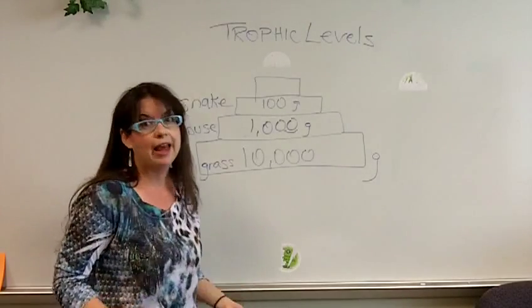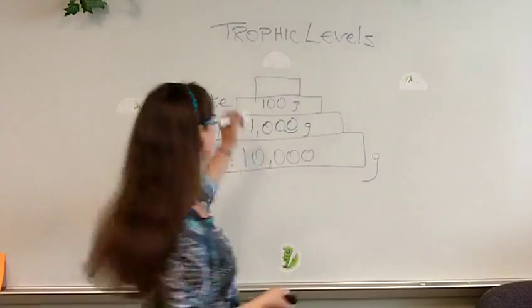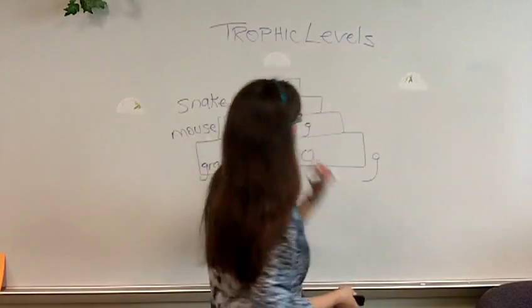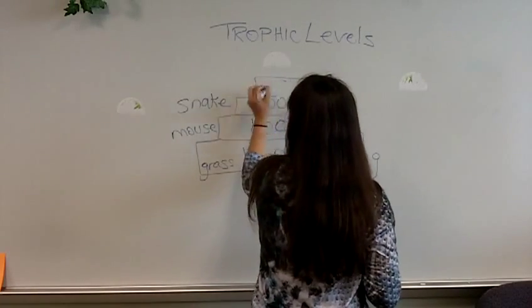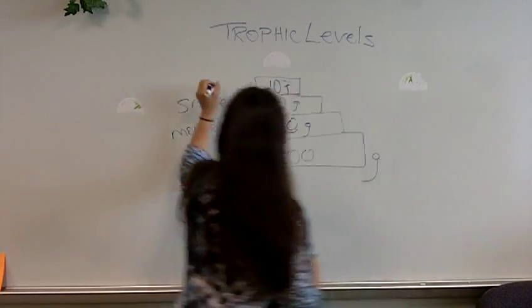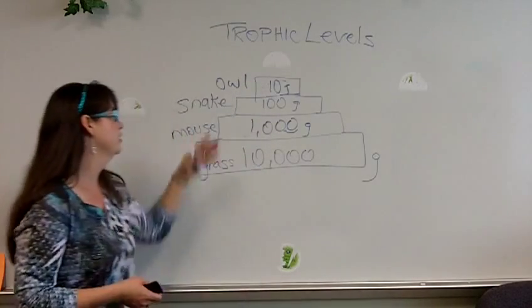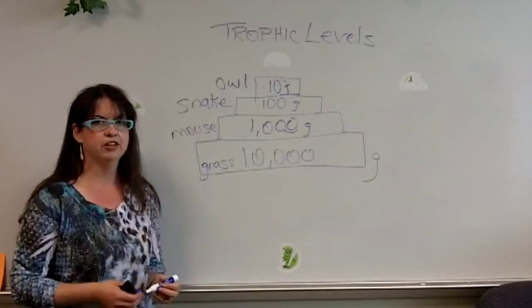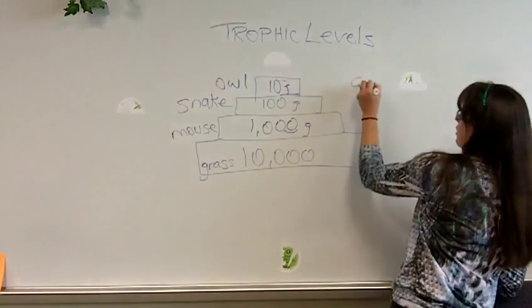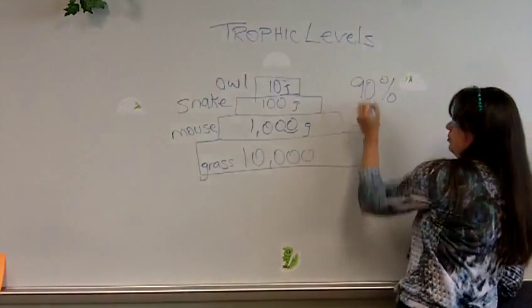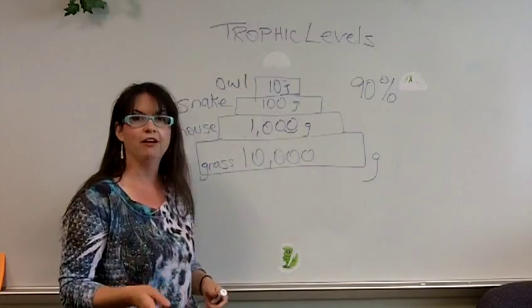And then what eats a snake? An owl. An owl or an eagle or a large predator bird. An owl at the top of the food chain would only get to keep 10 grams of that biomass. So as an animal eats up the food chain, it has lost its amount of biomass energy through heat. So you lose 90% as heat as you eat up the food chain. And I will talk about bioaccumulation in this way as well.